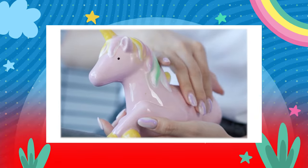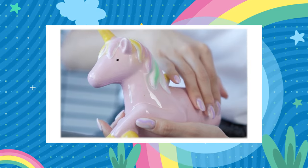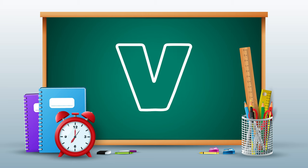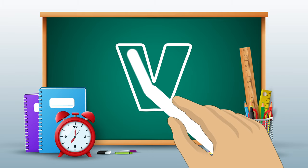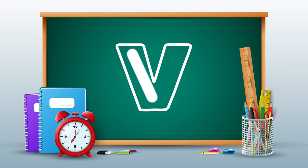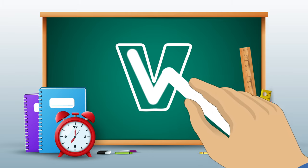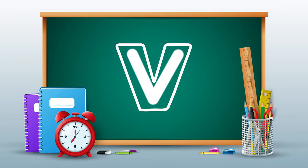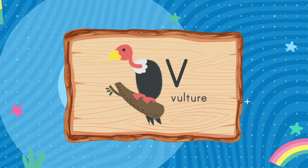Unicorn. The letter we're going to do next is the letter V. Slant down. Slant up. V is for Vulture.